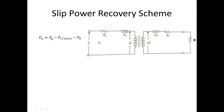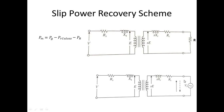The power lost across the external resistance is wasted — that is the disadvantage of rotor resistance control. In the slip power recovery scheme, instead of dissipating this power in a resistance, we connect a voltage source here. This power can then be transferred to the supply line or a battery, so that wasted power is recovered and utilized.